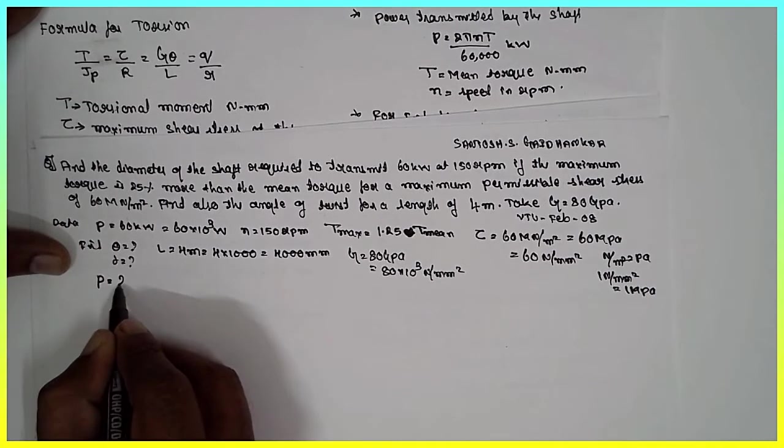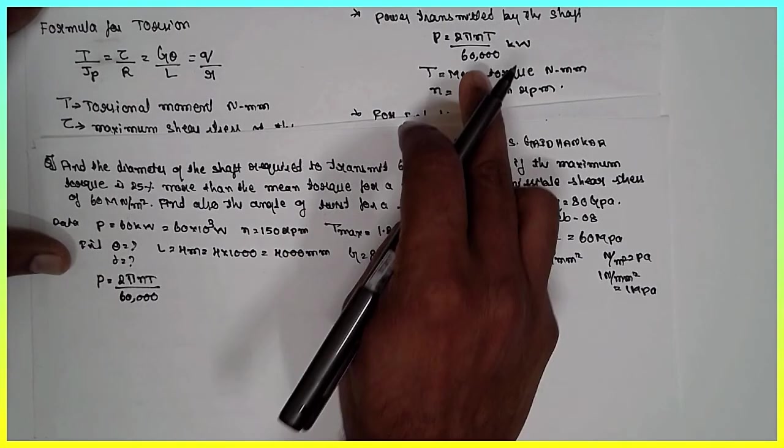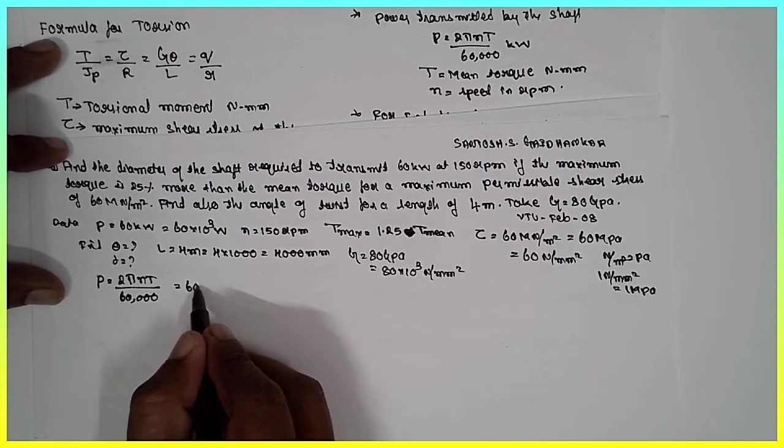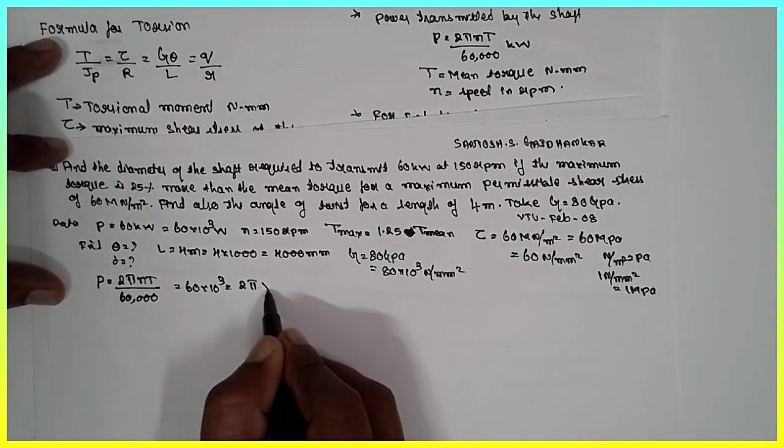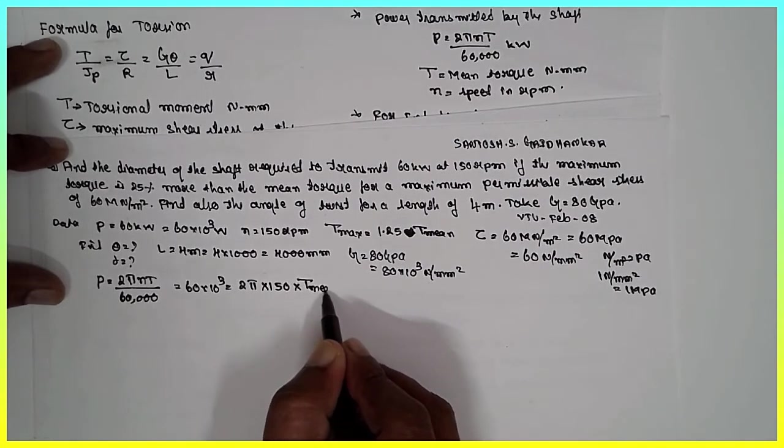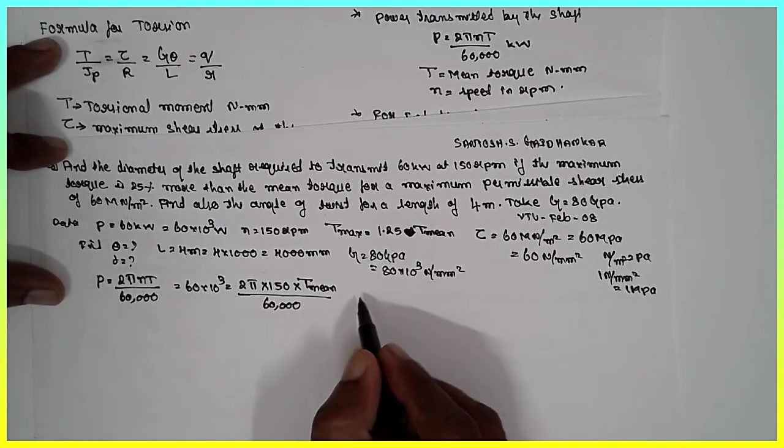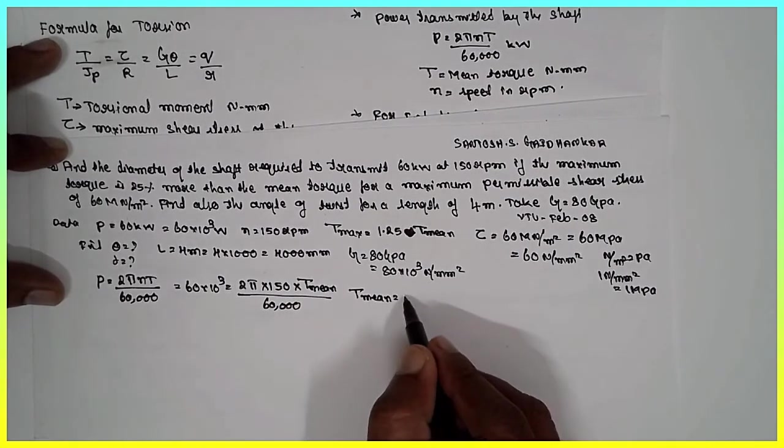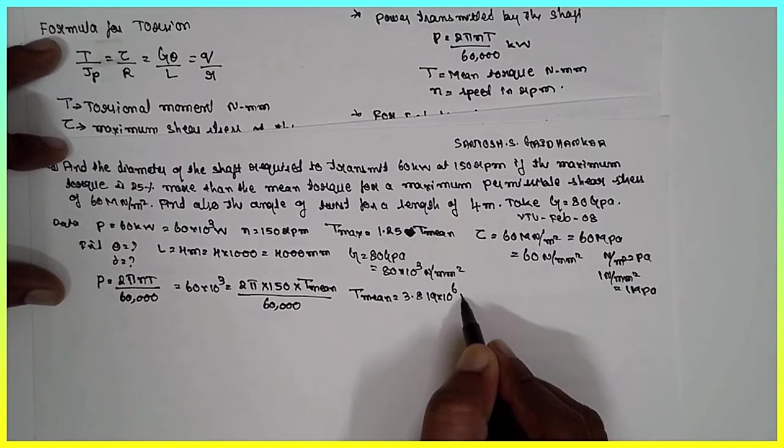Now, P equals 2 pi N T divided by 60,000. This is the formula here. The P is given, 60 times 10 raised to 3 equals 2 pi, N is 150, and this T is written as T mean, divided by 60,000. Cross-multiply, you will obtain T mean is 3.819 times 10 raised to 6 Nm.